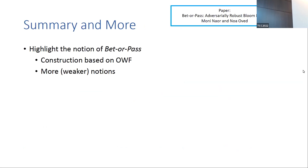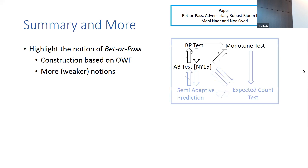To summarize: we highlight the Better Pass notion as capturing the strongest guarantee we can currently imagine — our wishful thinking — formalized as a simple test, making it convenient to check if a construction satisfies it. Although not shown today, we also proved this is not too strict a notion: a construction of a bloom filter satisfying it exists, based on one-way functions. The intuition is to take a reasonable bloom filter construction and add cryptography on top of it.